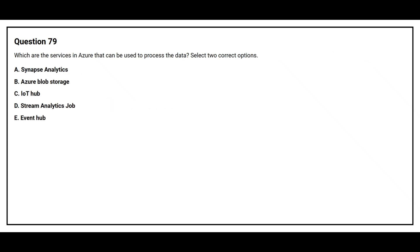Question number 79. Which are the services in Azure that can be used to process the data? Select two correct options. Option A: Synapse Analytics. Option B: Azure Blob Storage. Option C: IoT Hub. Option D: Stream Analytics Job. Option E: Event Hub.